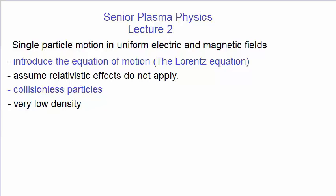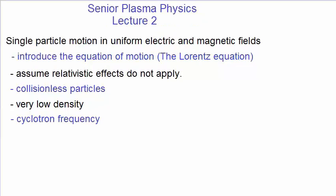In treating the plasma as consisting of single particle motion, we introduce the idea of cyclotron motion and its associated cyclotron frequency. This parameter appears throughout all sorts of treatments of plasmas in magnetic fields. Finally, we'll look at a magnetic effect known as diamagnetism, that arises in plasmas, but also arises in other materials.